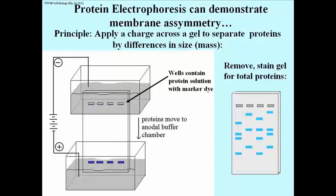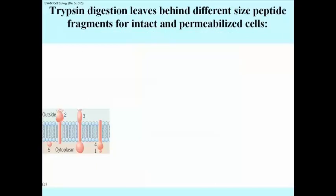What you are now looking at are bands of proteins. Each band represents one or more proteins that has migrated at a rate proportional to the size — that is to say, the length of the polypeptide. Larger proteins move more slowly, so they'll be nearer the wells where they started. Smaller proteins move more rapidly. Now let's take a look at how this technique can be used to show membrane asymmetry.